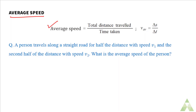If the speed is uniform, the speed value stays the same throughout. But if an object has non-uniform speed, the speed is different at different intervals of time. The average speed's value may or may not be equal to any one of the instantaneous speed values.